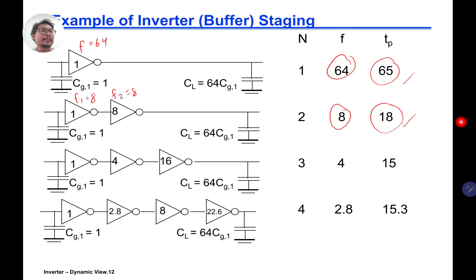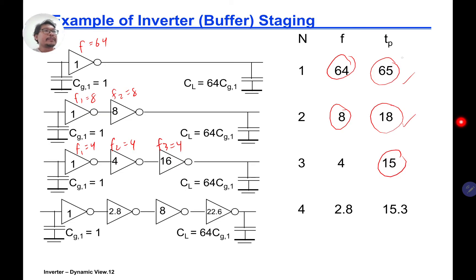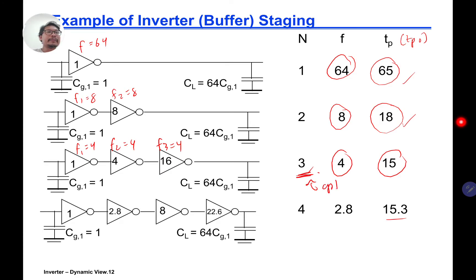For three inverters, F equals the cube root of 64, so F1 equals F2 equals F3 equals 4. The total delay is 4 times 3 plus 3, which is 5 plus 5 plus 5 equals 15 — so 15 TP0. For four inverters you get 15.3 TP0. So the optimum number of inverters is 3, because going to 4 gives 15.3 and going to 2 gives 18.